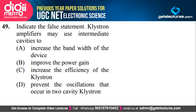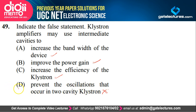Indicate the false statement about klystron amplifier. The klystron amplifier may use intermediate cavities. Statements: to increase bandwidth of the device — true; to improve the power gain — true; to increase efficiency of the klystron — true; to prevent the oscillation that occur in two-cavity klystron — this is wrong. They are not using intermediate cavities to prevent oscillation in two-cavity klystron. So the answer to question 49 is option D — this is the false statement.